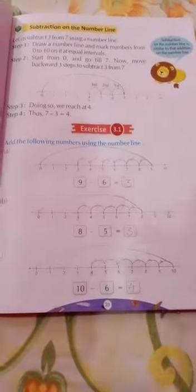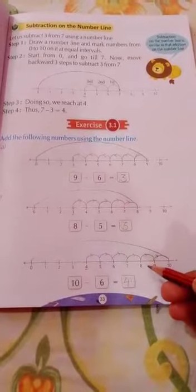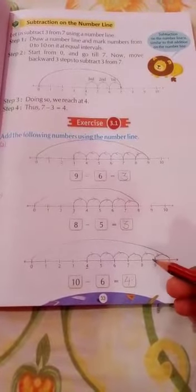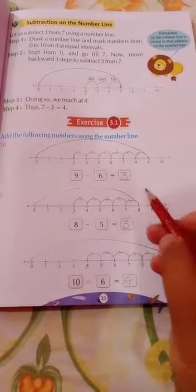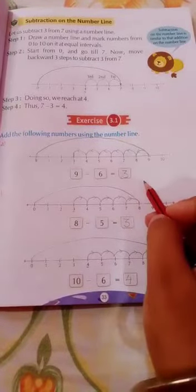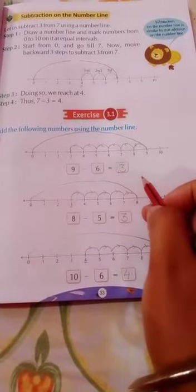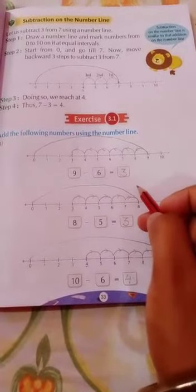So kids, this is all for question 3.1. You have to write this in your copy. So kids, you have to understand the number line, how to do subtraction on the number line. So write in your copy, write properly and neatly. Okay children, thank you. Have a good day.